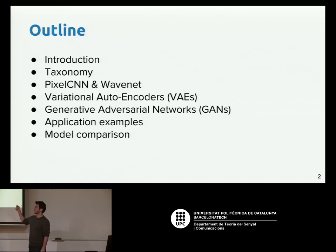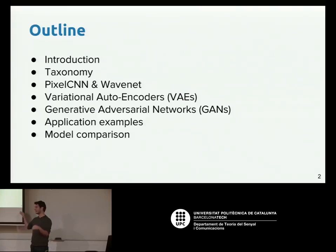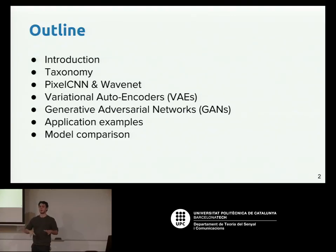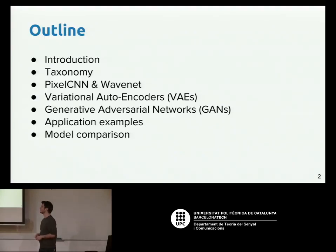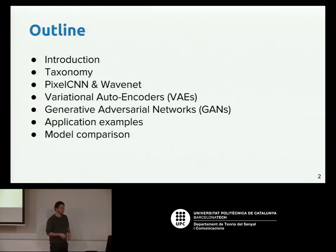We'll cover the three most famous deep generative models: first, PixelCNN and WaveNet — which is basically the current Google Assistant speech synthesizer and the state-of-the-art generative model for speech. Then variational autoencoders, which can be seen as an evolution over autoencoders. And finally generative adversarial networks, which are the holy grail of generative modeling in deep learning right now. Then some application examples and model comparisons.